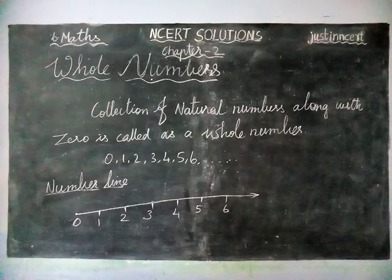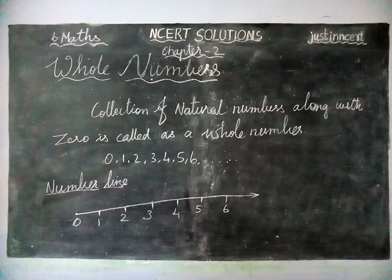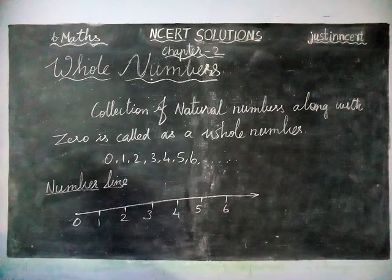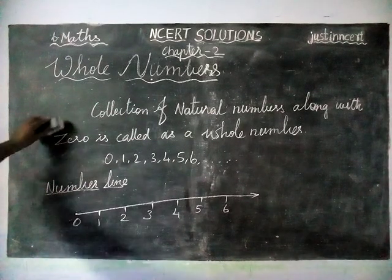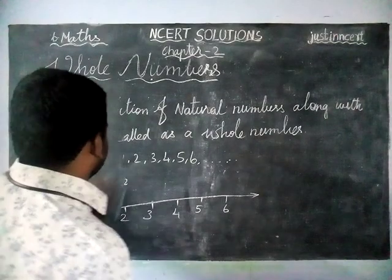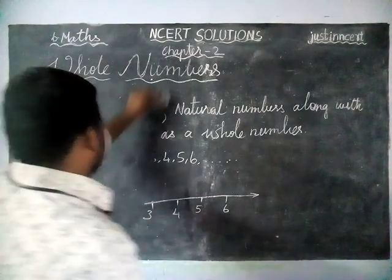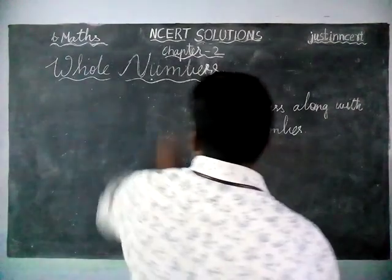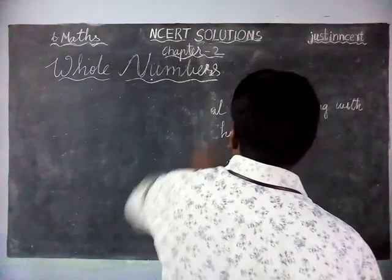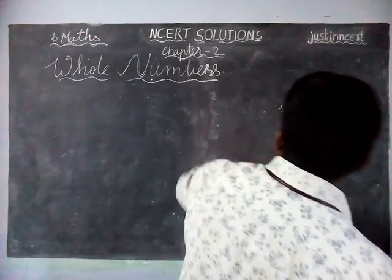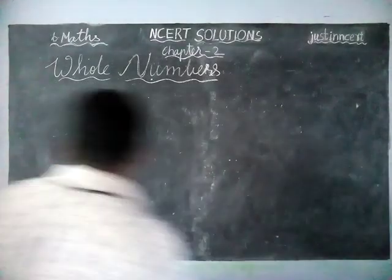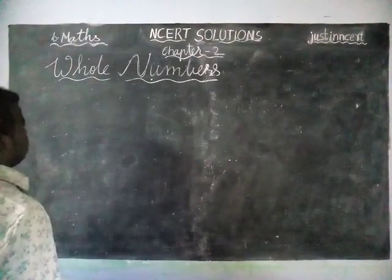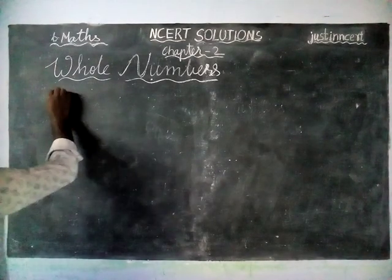Now we are going to see how to find addition, subtraction, and multiplication on the number line. First, we are going to find addition on the number line.